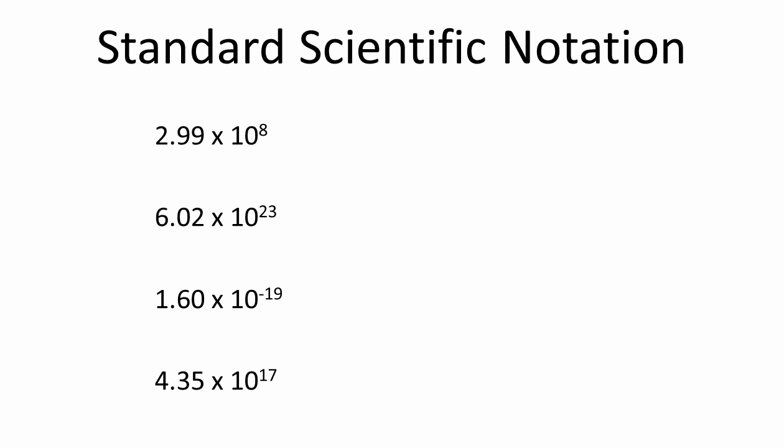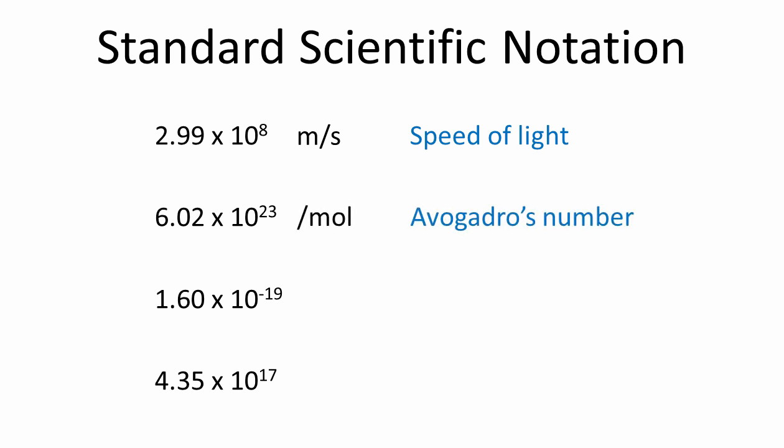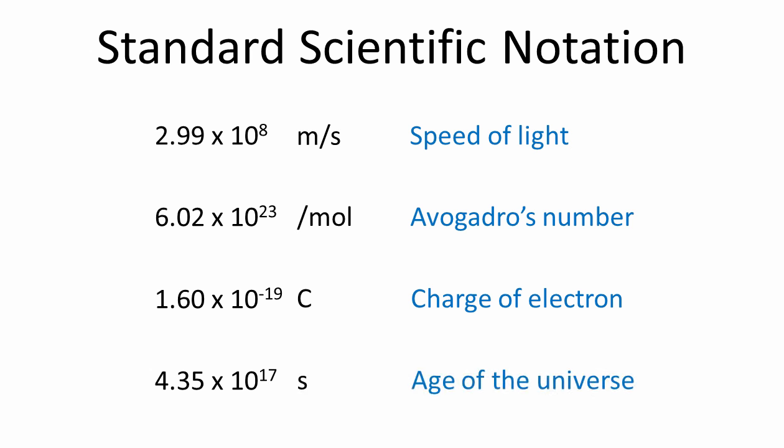Floating-point binary is similar to standard scientific notation in base 10, so it's worth getting to know this first. Here are some special values in scientific notation. This is the speed of light in a vacuum, measured in meters per second. This is Avogadro's number, also called a mole — the number of particles you'll have if you measure out the molecular weight of a substance in grams. It's a very large value. This is the elementary charge — the electrical charge of an electron measured in coulombs. This number is tiny. And this is the age of the universe in seconds. What really matters to us is that these are either very large or very small values.